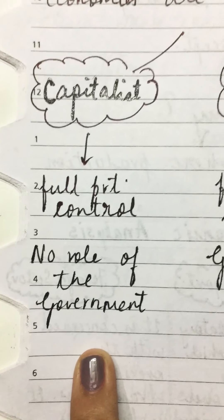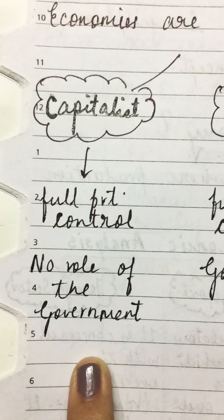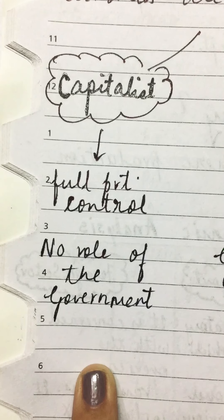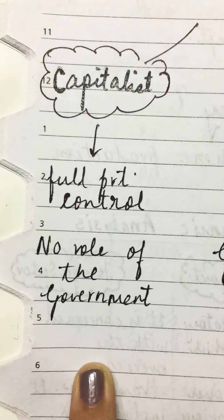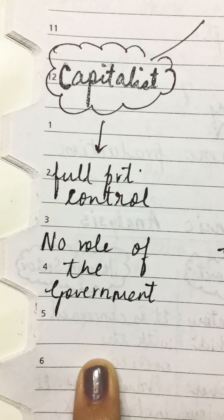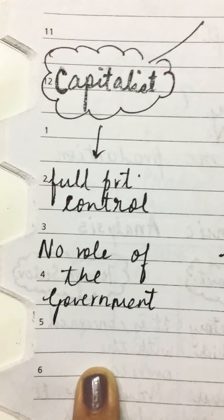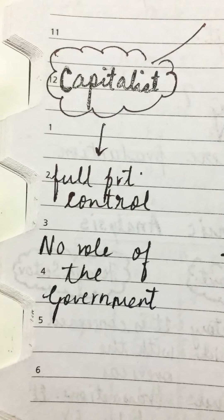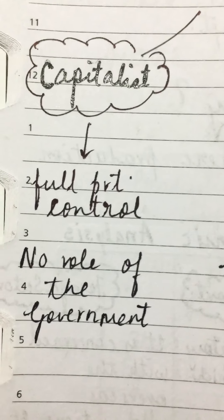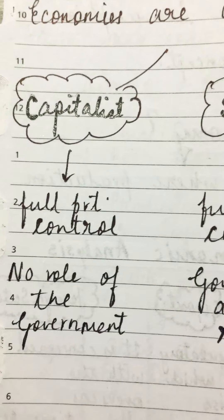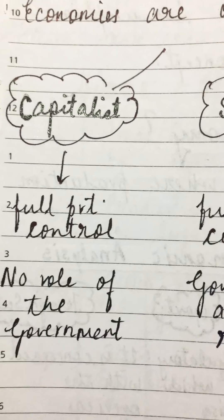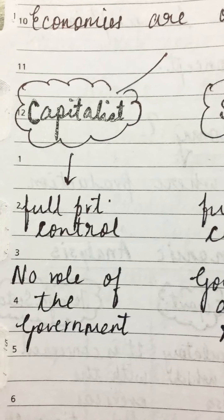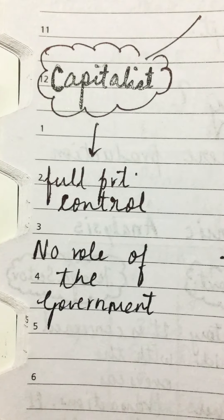The capitalist economy's main motive is profit. Then comes prices - because government has no control, there is a price mechanism where prices are set. This brings competition. Since there are many producers, there is a lot of competition. One term is 'laissez-faire,' which means free from government intervention - this is an economy where government has no control.